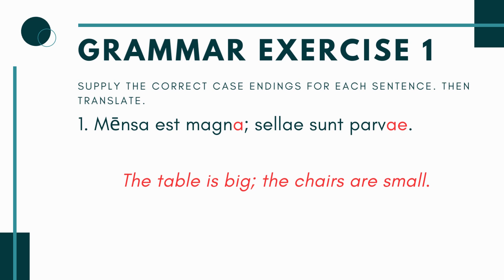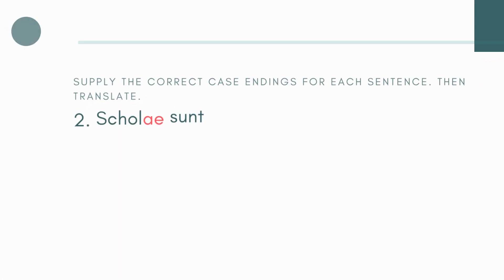So you have 'mensa est ___' and 'sellae sunt ___.' You want to notice that mensa is singular — the table — so if we have a singular noun, the adjective going with it is also going to be singular: magna with an -a. The answers are highlighted in red. On the other side, sellae means chairs; it's plural because of the -ae, so you're saying sellae sunt parvae with an -ae, because they're describing sellae. Sentence 1 says: the table is big, the chairs are small.